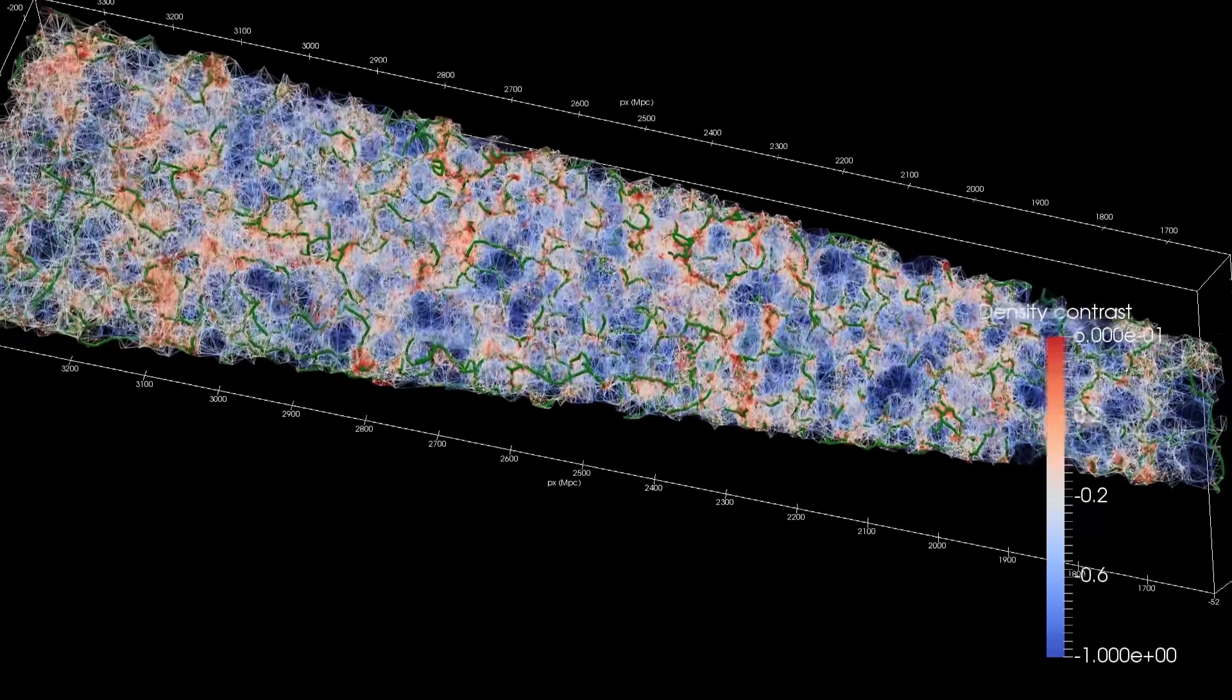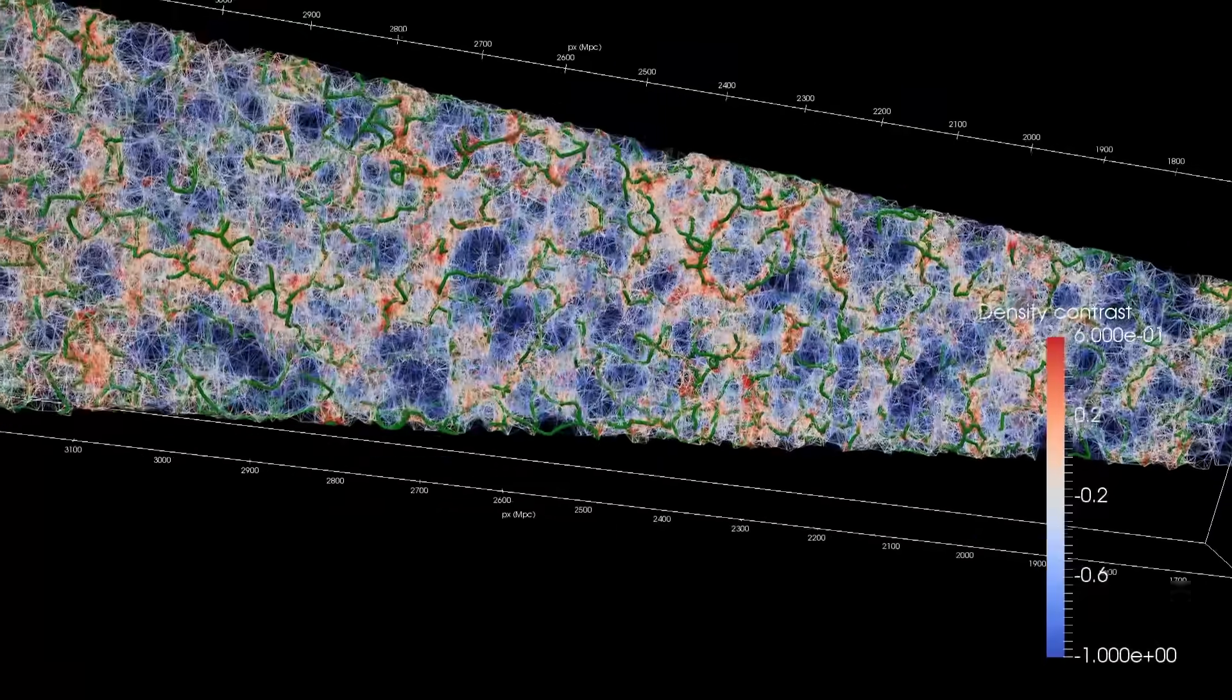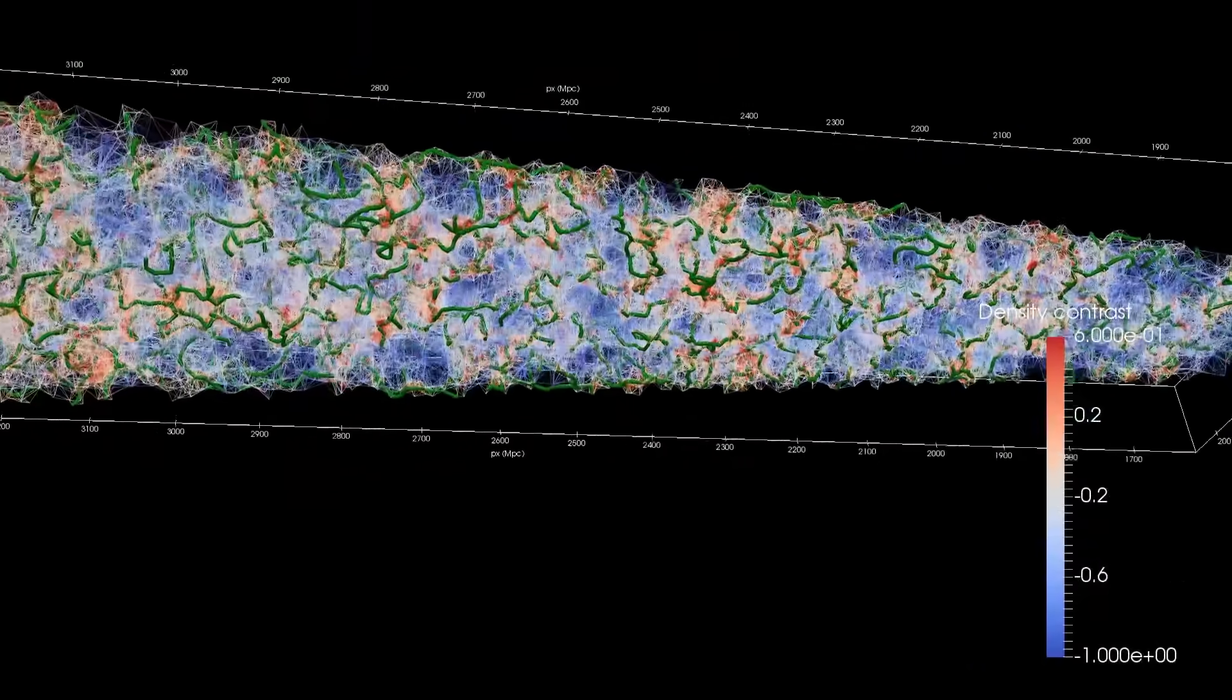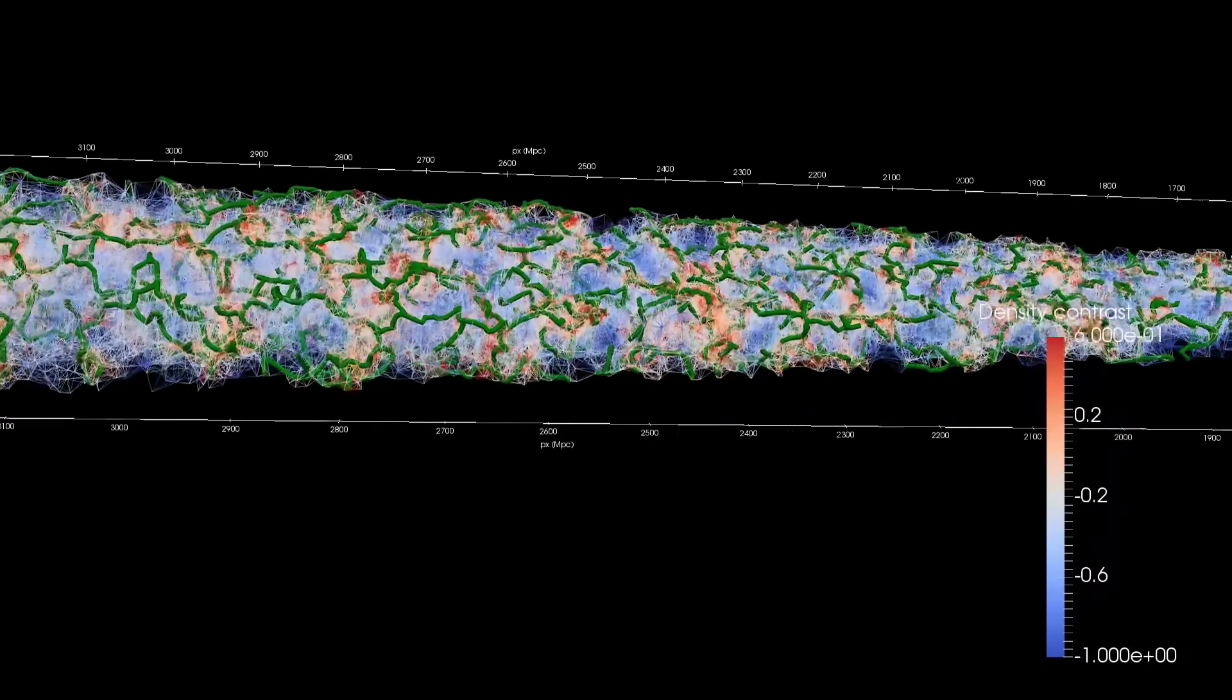For decades, those surveys have been corrected in the CMB rest frame. If that frame is wrong, the corrections are wrong and our picture of the large-scale universe may have already been skewed at its foundation.